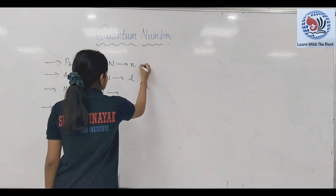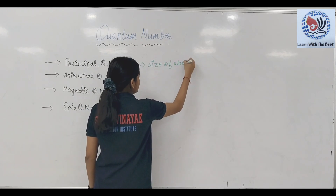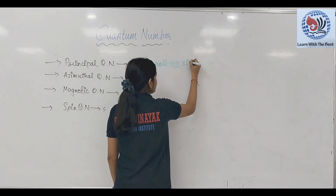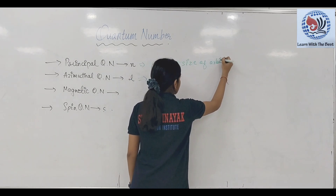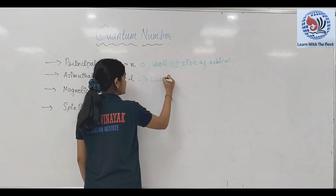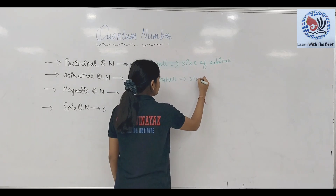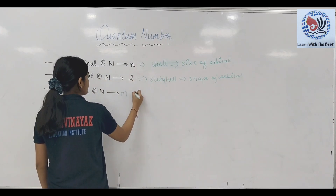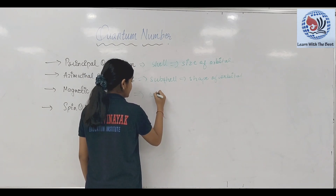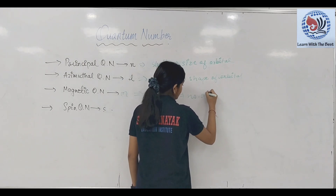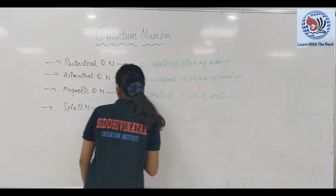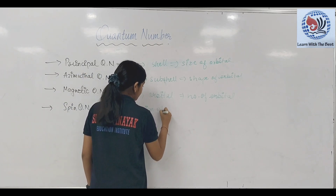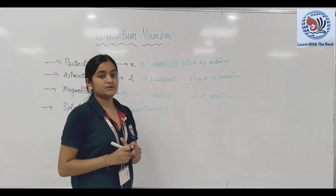तो principal quantum number बताता है size of shell — shell के बारे में, size of orbital। Azimuthal quantum number बताता है sub shell के बारे में और shape of orbital। Magnetic quantum number बताता है orbital के बारे में — mainly number of orbitals। And spin quantum number बताता है direction के बारे में, electron के। Hope you understand this. Thank you.